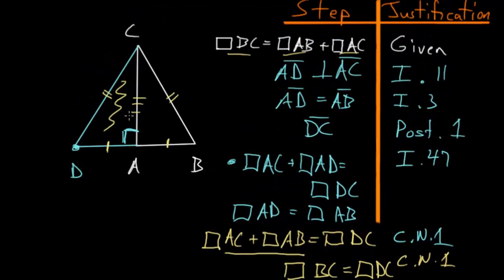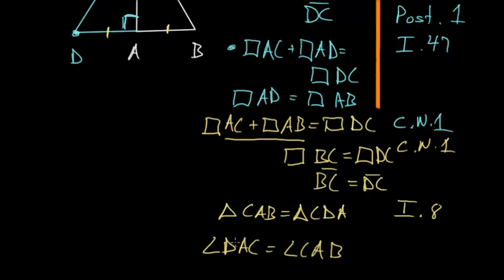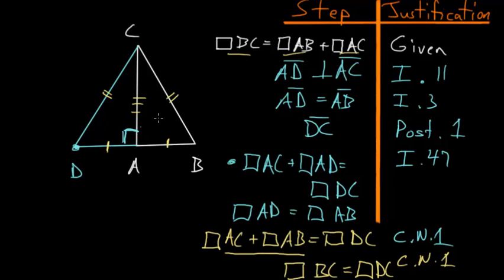These two triangles are equal to each other, which means the angles within the triangles are equal as well. So angle DAC equals angle CAB. But we already know that angle DAC is a right angle, so that means angle CAB is also a right angle. We've just proven that angle CAB is a right angle.